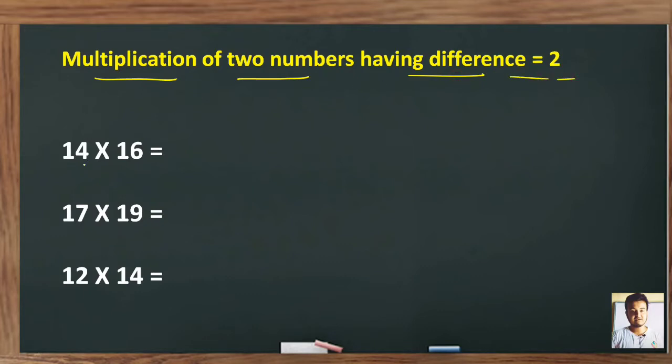You can see any two numbers in which difference is two. 14 into 16, the difference is two. Similarly, 17 into 19, the difference is two. Similarly, 12 into 14, the difference is two. So how can you solve this? Just remember: middle square minus one.